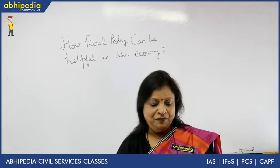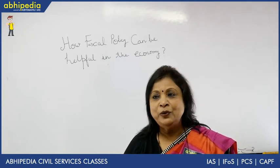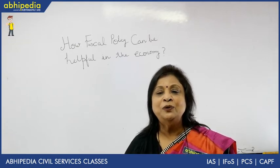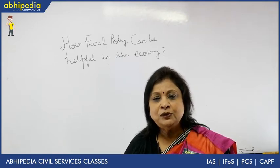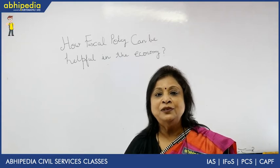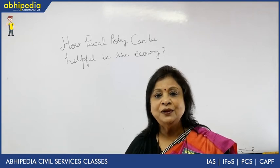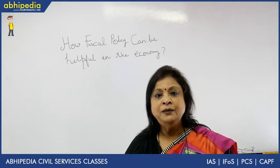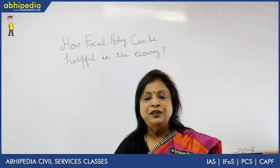The second important objective of fiscal policy is price stability. We know that prices are subject to change and fluctuate frequently. To achieve price stability, various tools are used. In the case of inflation, the level of public expenditure is reduced and the level of progressive tax is increased, so that people are left with less purchasing power. Less purchasing power naturally brings down aggregate demand, which curtails prices and inflation can be checked to some extent.